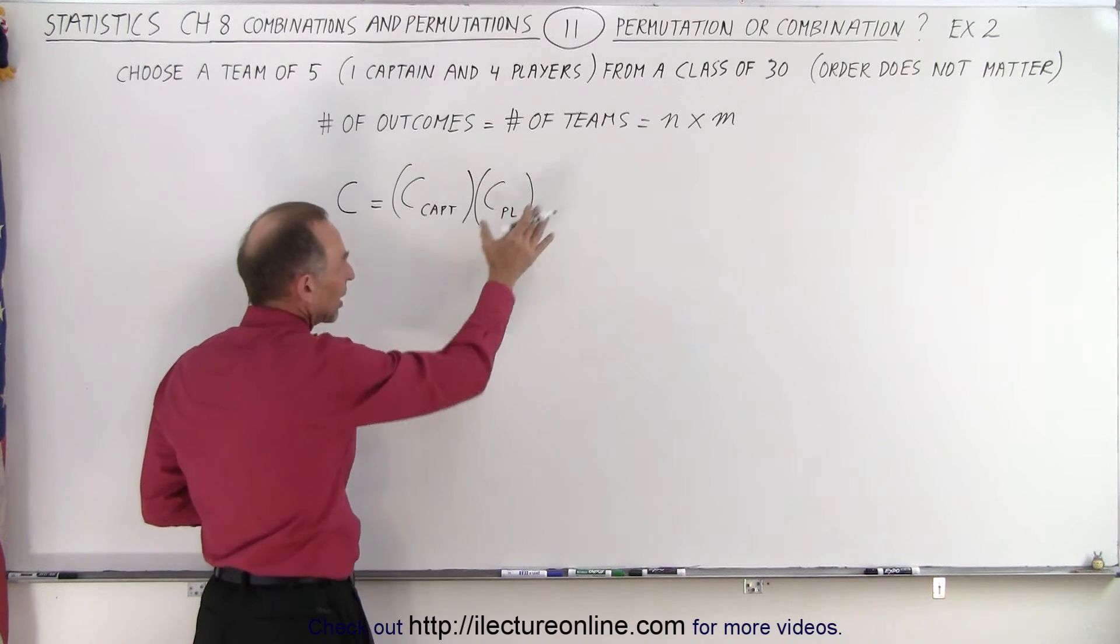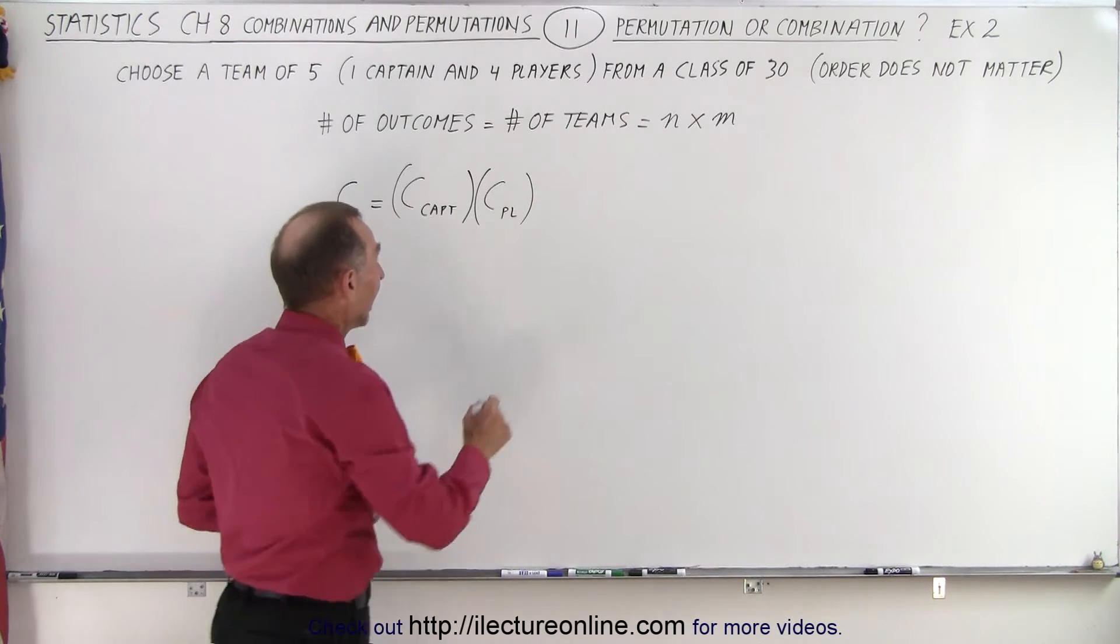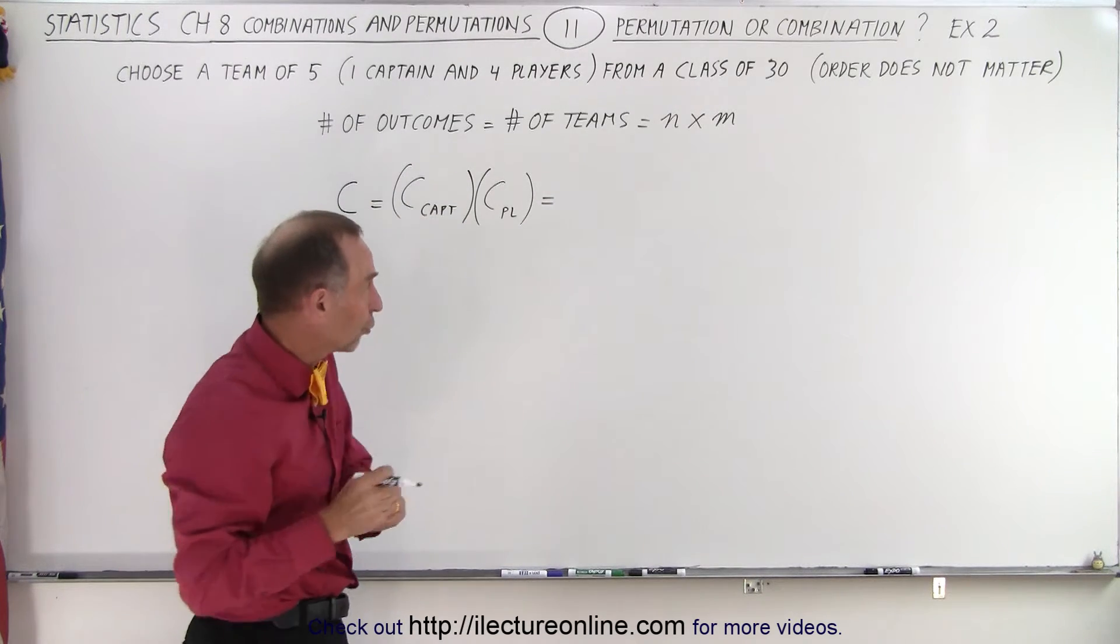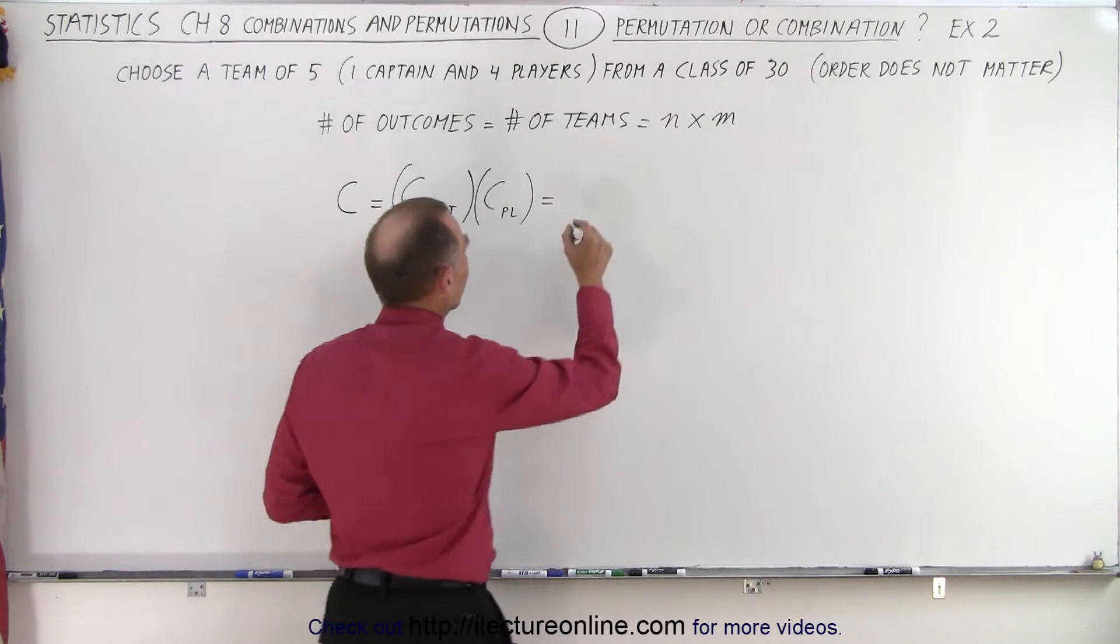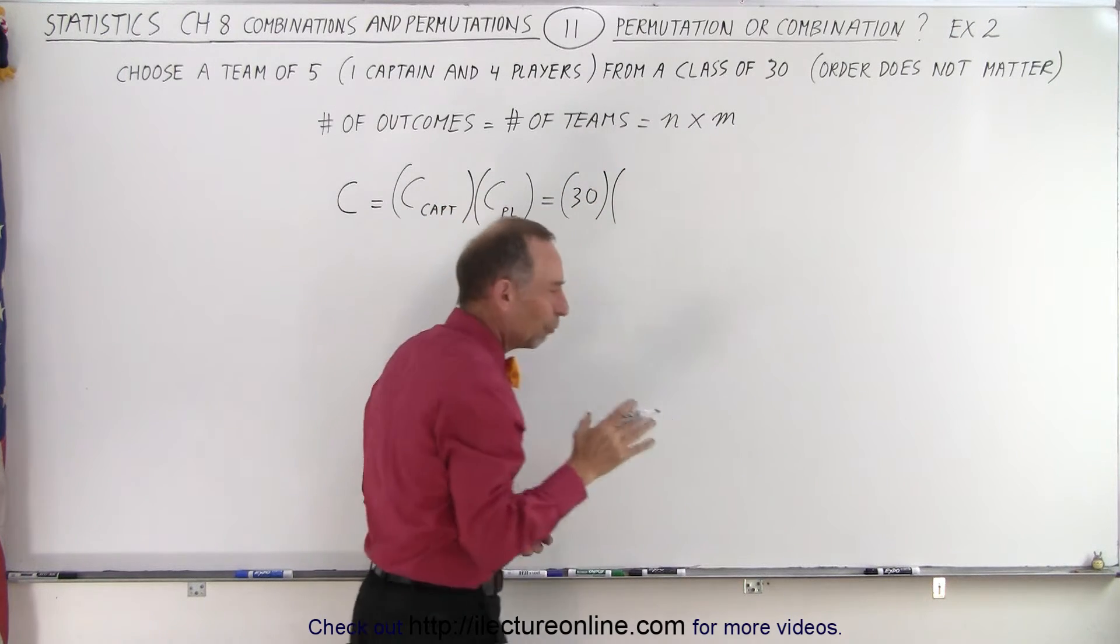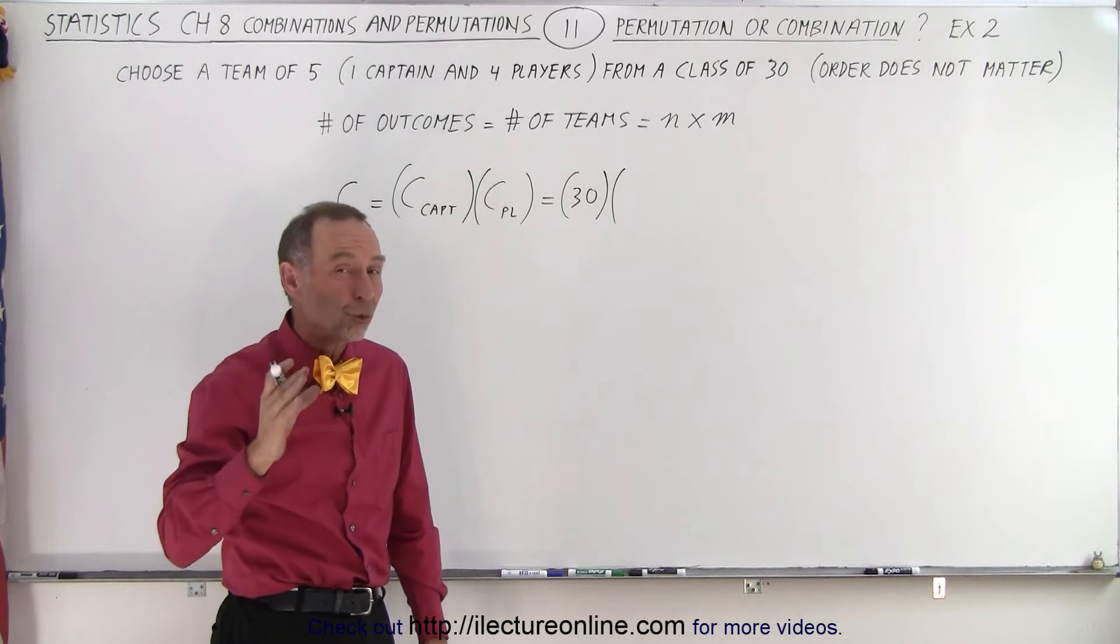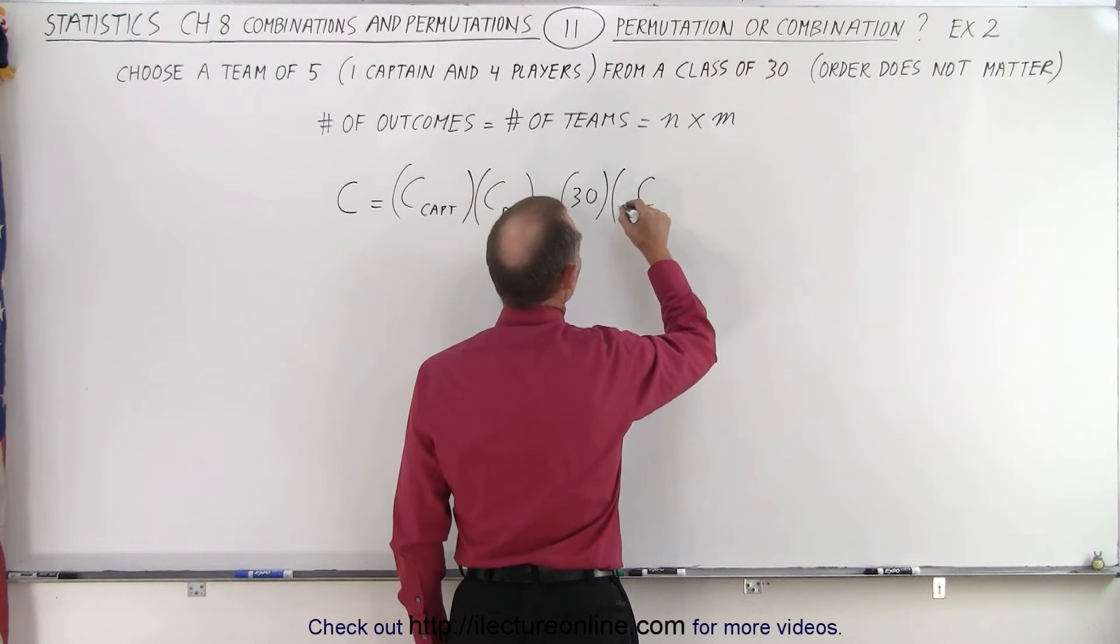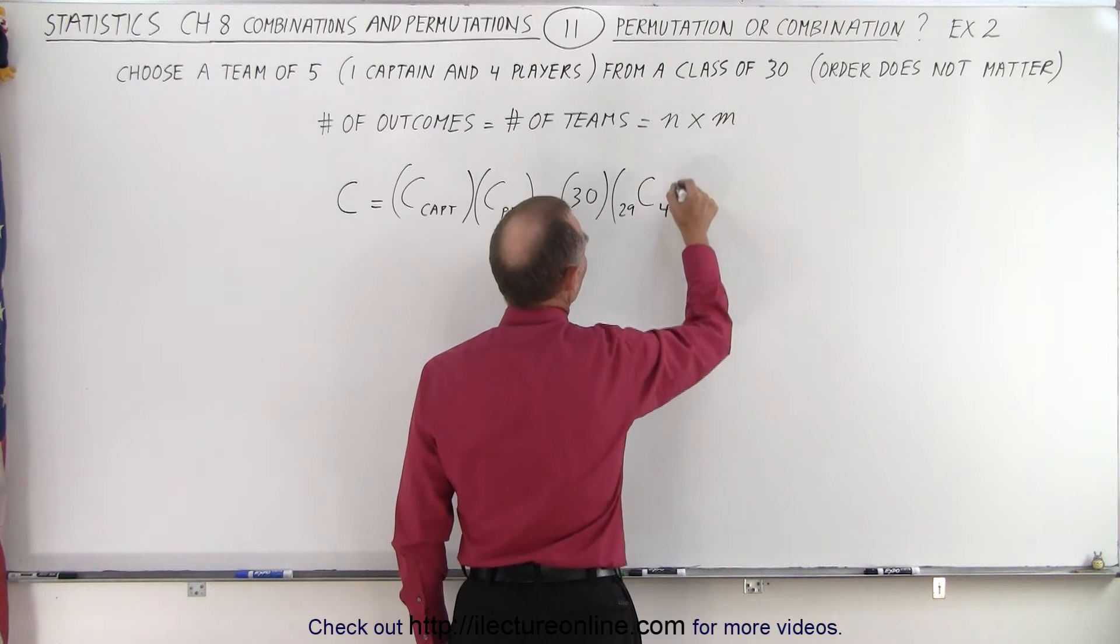So essentially, it's going to be the product of the two outcomes. And since there's 30 students and you pick one captain out of 30 students, there's 30 outcomes for the first one. And then we have to pick four players out of the remaining 29, so that would be the combination of 29 players picking 4.